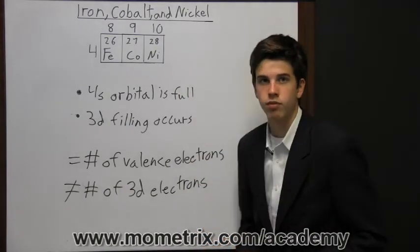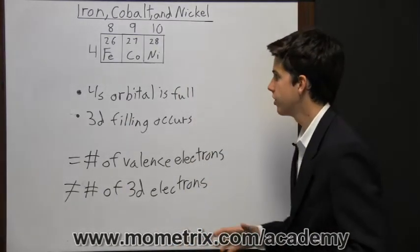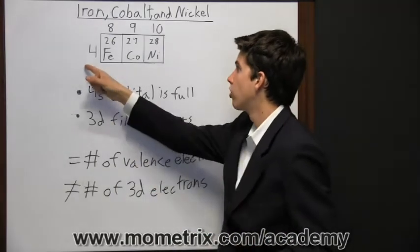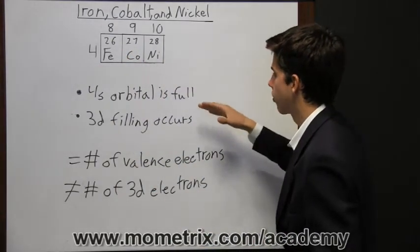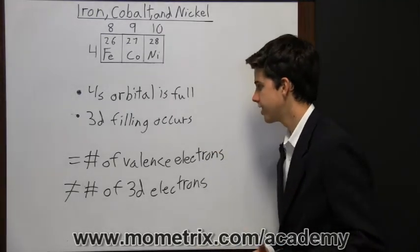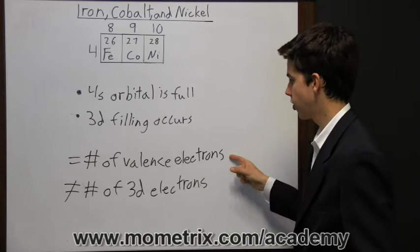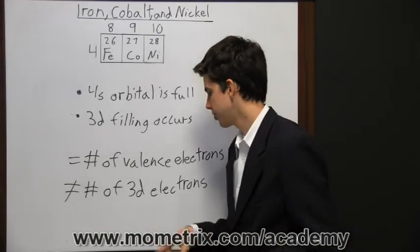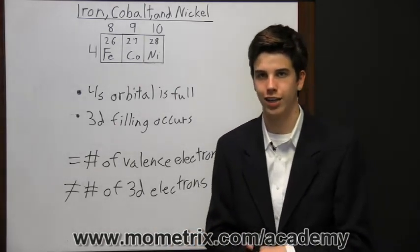So again, iron, cobalt, and nickel are in what we call the d-block of the periodic table of elements. They're in the same row but different columns. The 3d does not start filling until the 4s orbital is full. This causes there to be an equal number of valence electrons above them but an unequal number of 3d electrons.